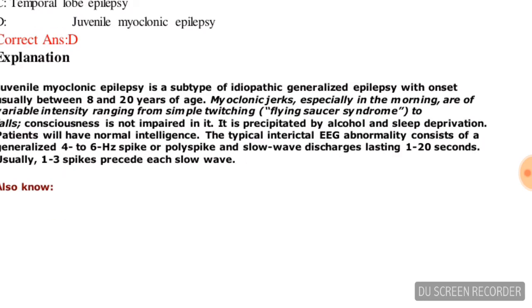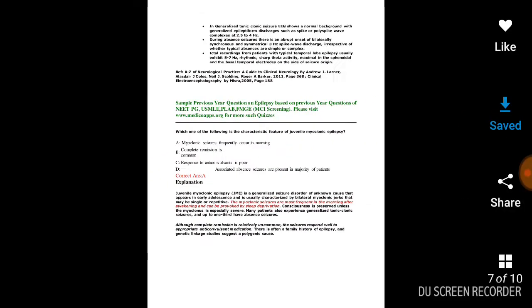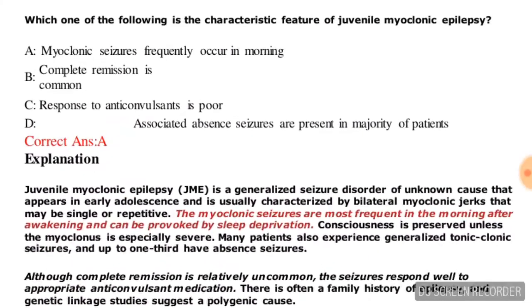Next question: which one of the following is a characteristic feature of juvenile myoclonic epilepsy? Options are: myoclonic seizures frequently occur in the morning, complete remission is common, response to anticonvulsants is poor, or associated absence seizures are present in the majority of patients. The correct answer is that myoclonic seizures frequently occur in the morning — option A.